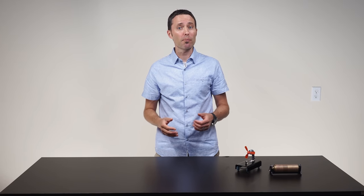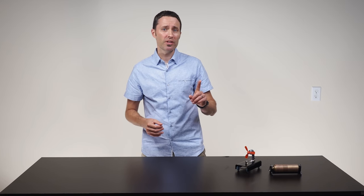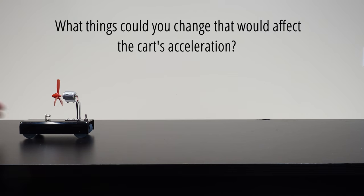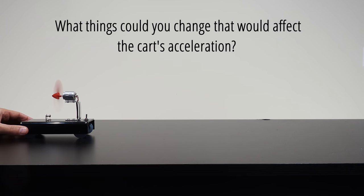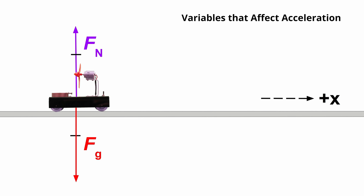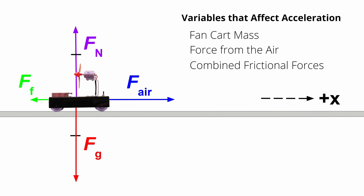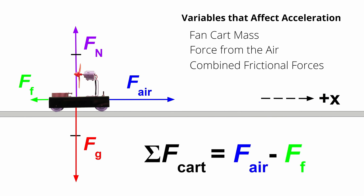Before guiding students to develop a procedure for this lab, students will need to come up with variables they think will affect the cart's acceleration, and then investigate how one of these variables is related to it. Ask students what things they could change about the situation. They will list things such as the cart's mass, the size of the force of the air pushing forward on the propellers, and the frictional forces on the cart. Help guide students to see that both the force from the air and frictional forces affect the size of the sum of the forces on the cart, and it is the sum of the forces that affects the cart's acceleration.